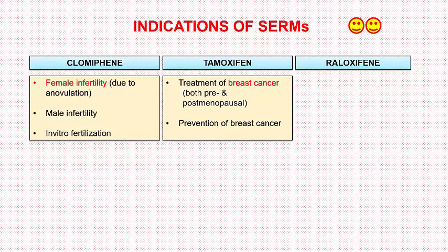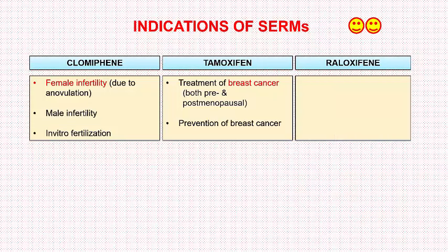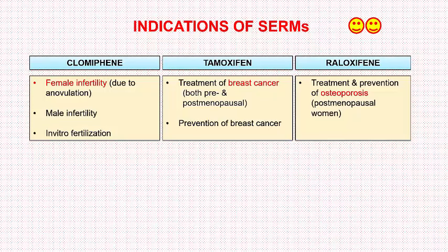Tamoxifen is used in the treatment and prevention of breast cancer, both pre- and postmenopausal. Raloxifene is used in the treatment and prevention of osteoporosis in postmenopausal women. To summarize: Clomiphene for infertility, Tamoxifen for breast cancer, and Raloxifene for osteoporosis. If you liked this video and found it beneficial, please share it and do not forget to press the subscribe button.